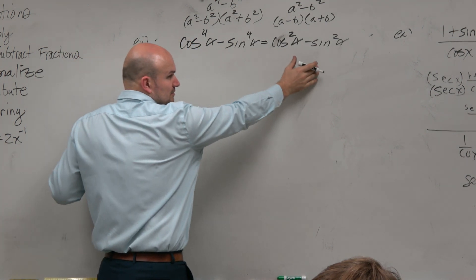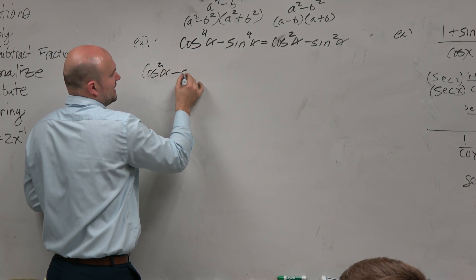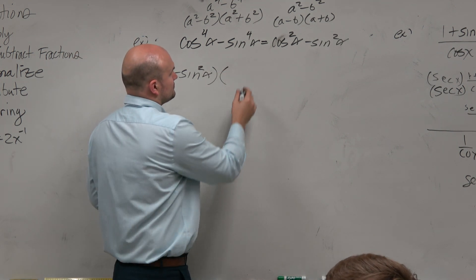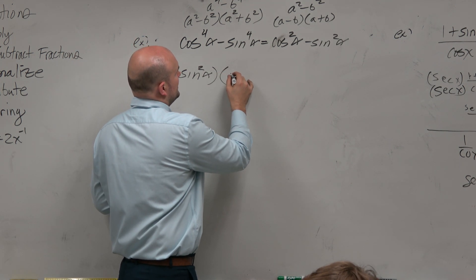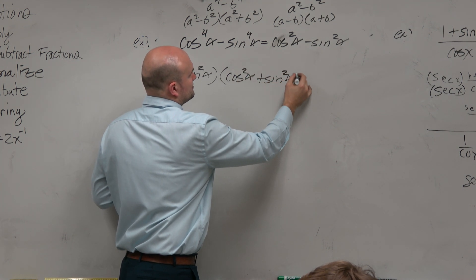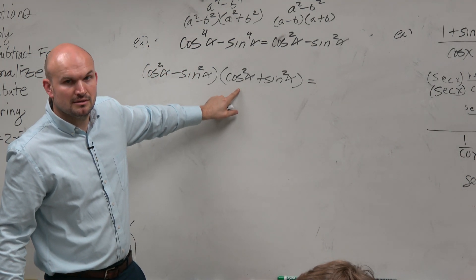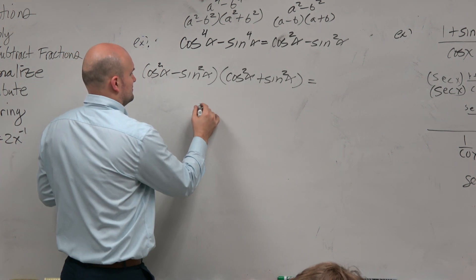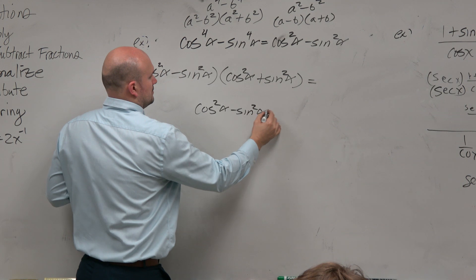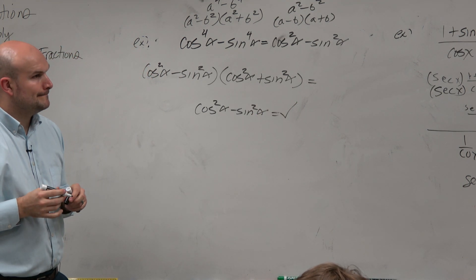So I'm going to make the left side look like the right side. I'm going to factor this down into cosine squared of alpha minus sine squared of alpha, times cosine squared of alpha plus sine squared of alpha. Well, what is cosine squared plus sine squared? It's 1. There you go. Done.